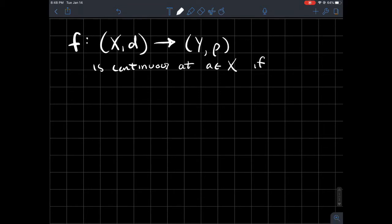This is the definition here. For every epsilon bigger than zero, for any arbitrary positive number epsilon, there exists some positive number delta.